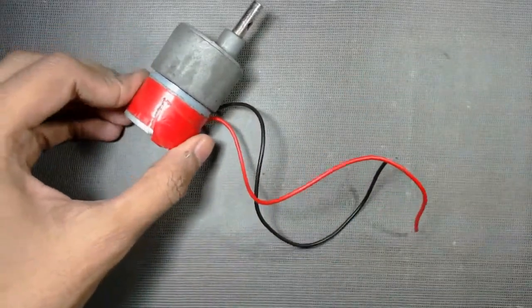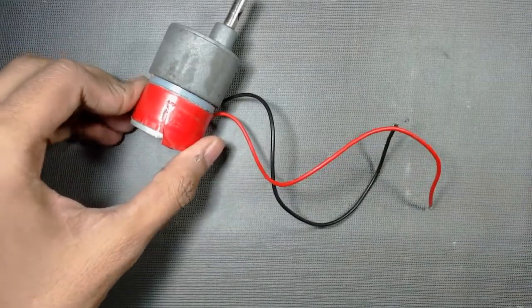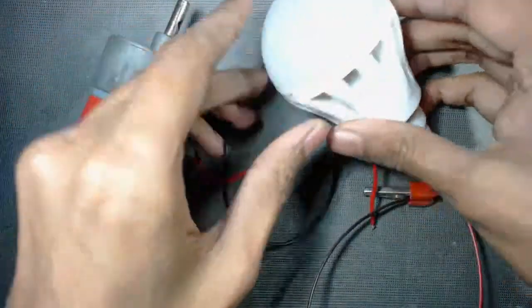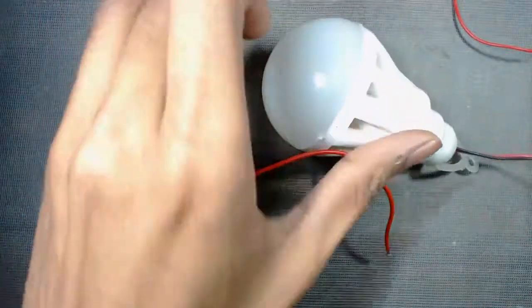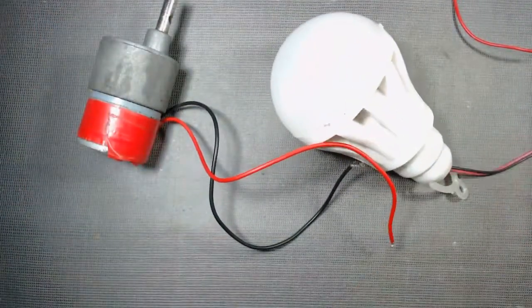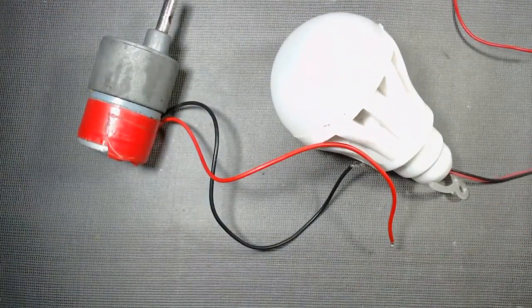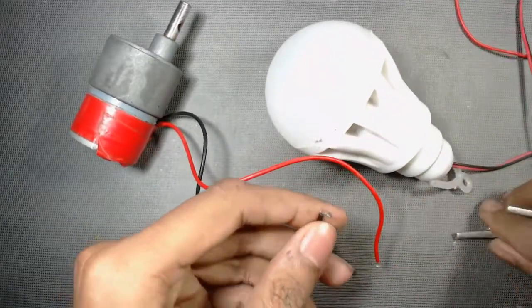Now let us take one DC bulb, a 12 volt DC bulb, and connect these two terminals to the two terminals of the motor.